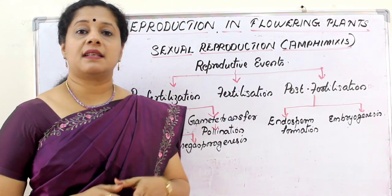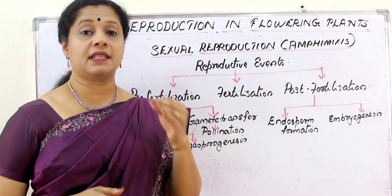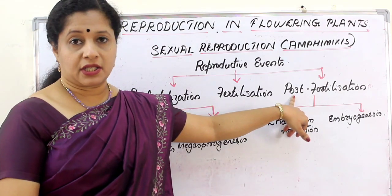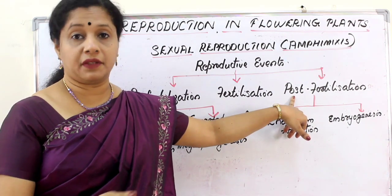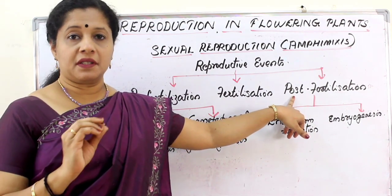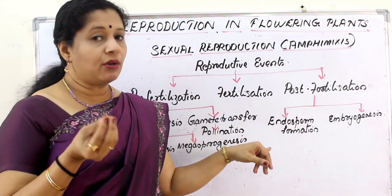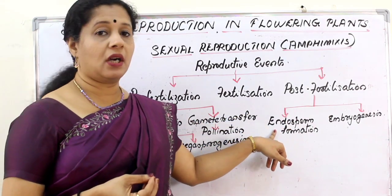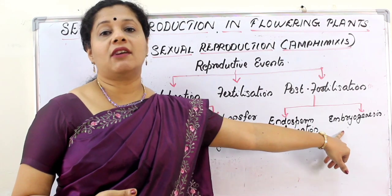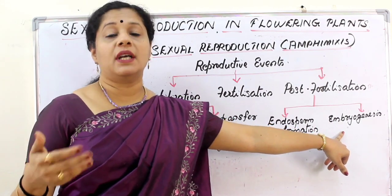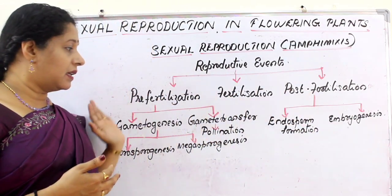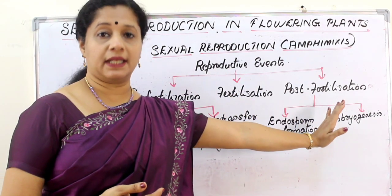Once they come together, fusion takes place and as a result a zygote forms. After the zygote forms, we move to post-fertilization events — what happens after fertilization. In plants, two events mainly happen: first, some amount of food material called endosperm is produced, and then the zygote develops into an embryo. That process is called embryogenesis. We are going to learn all these processes one by one in this chapter.